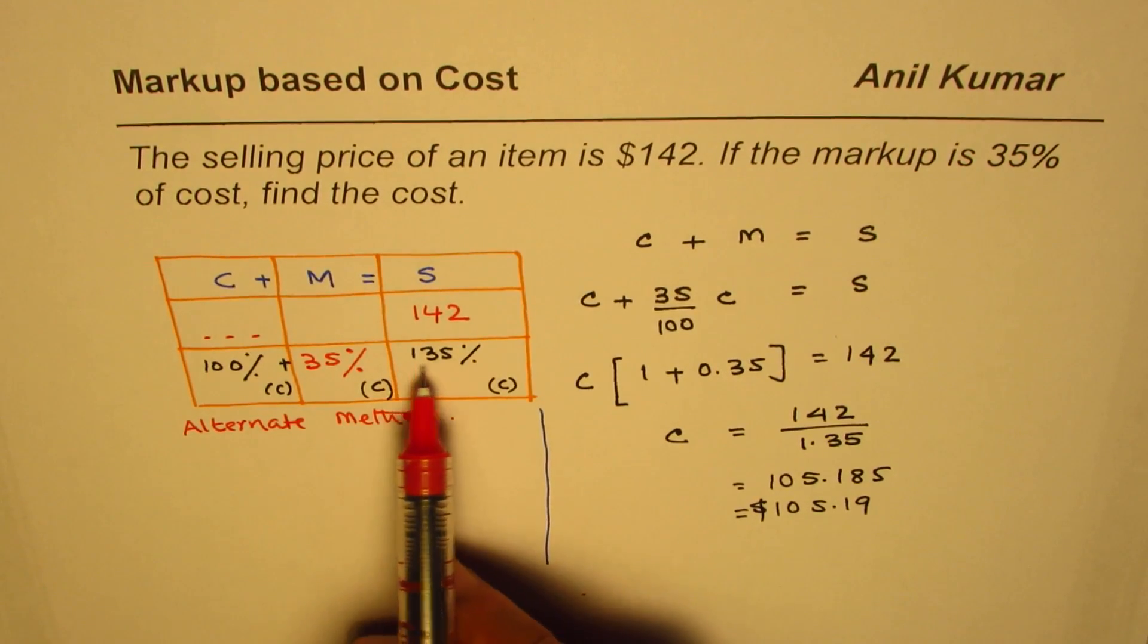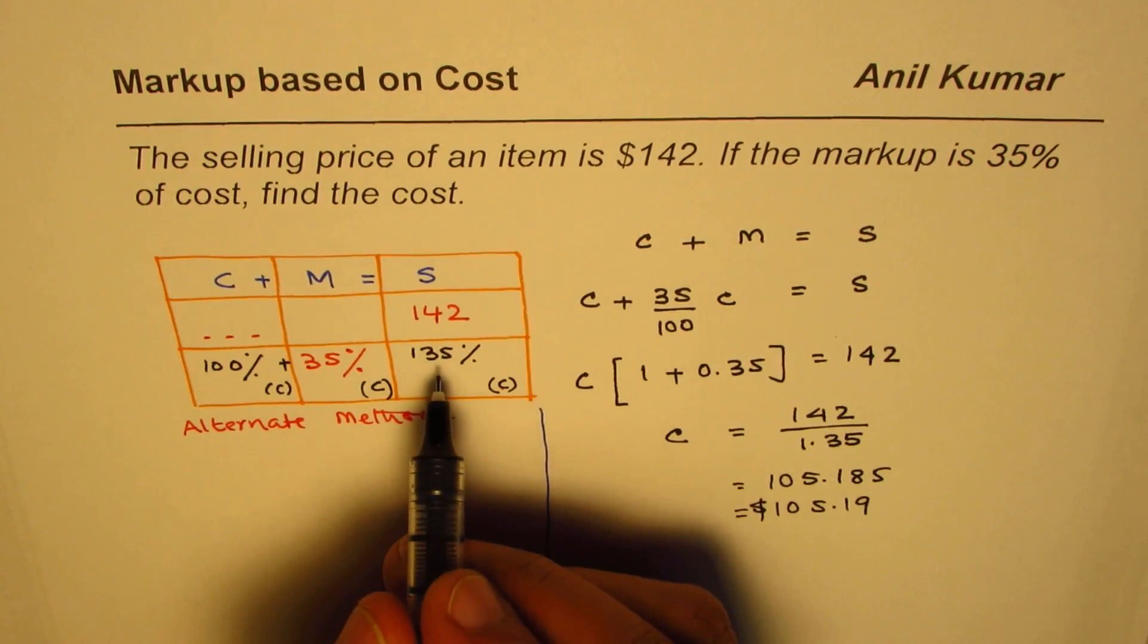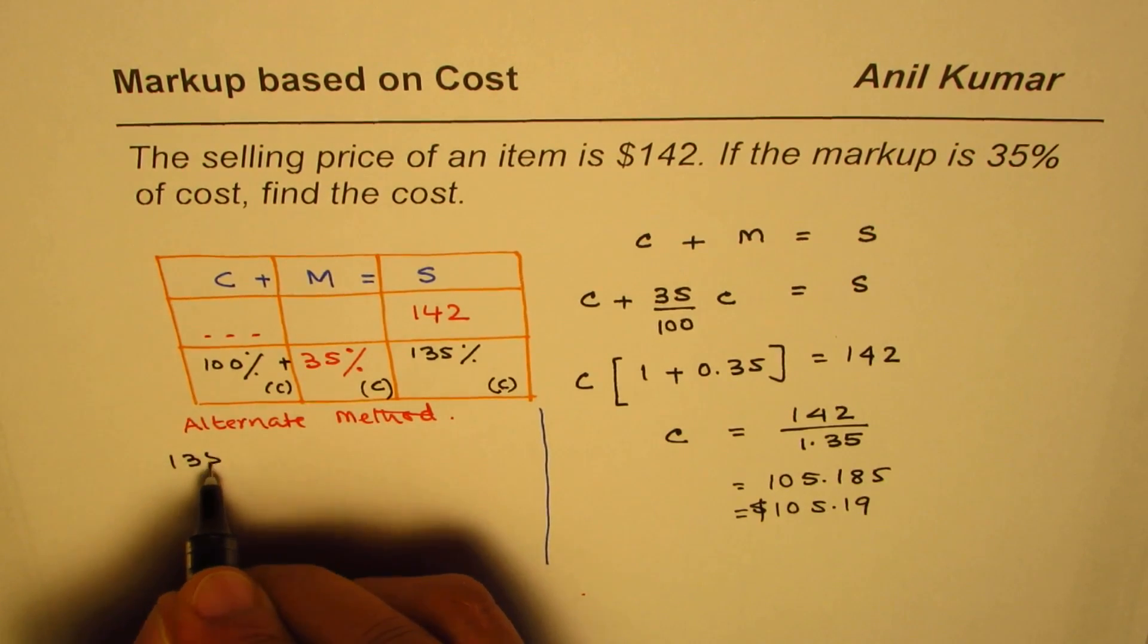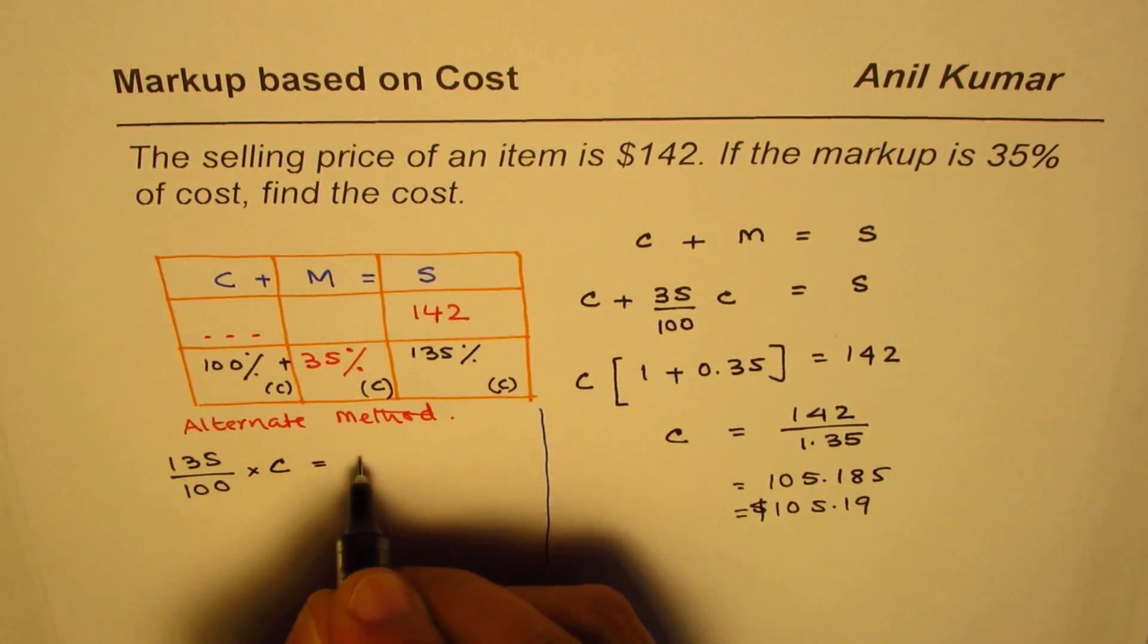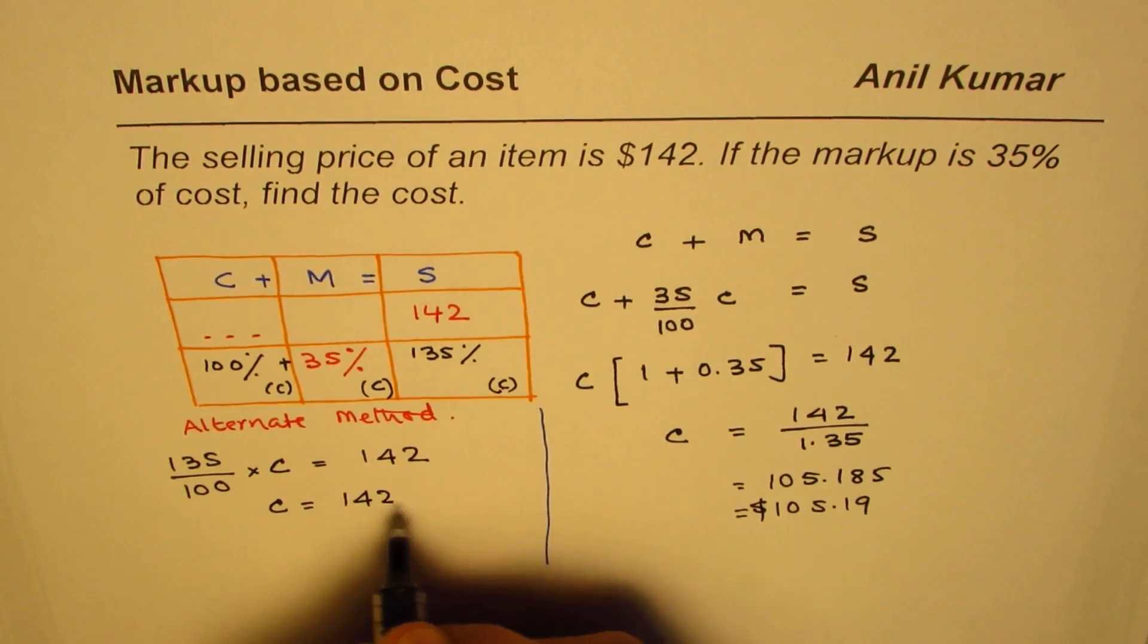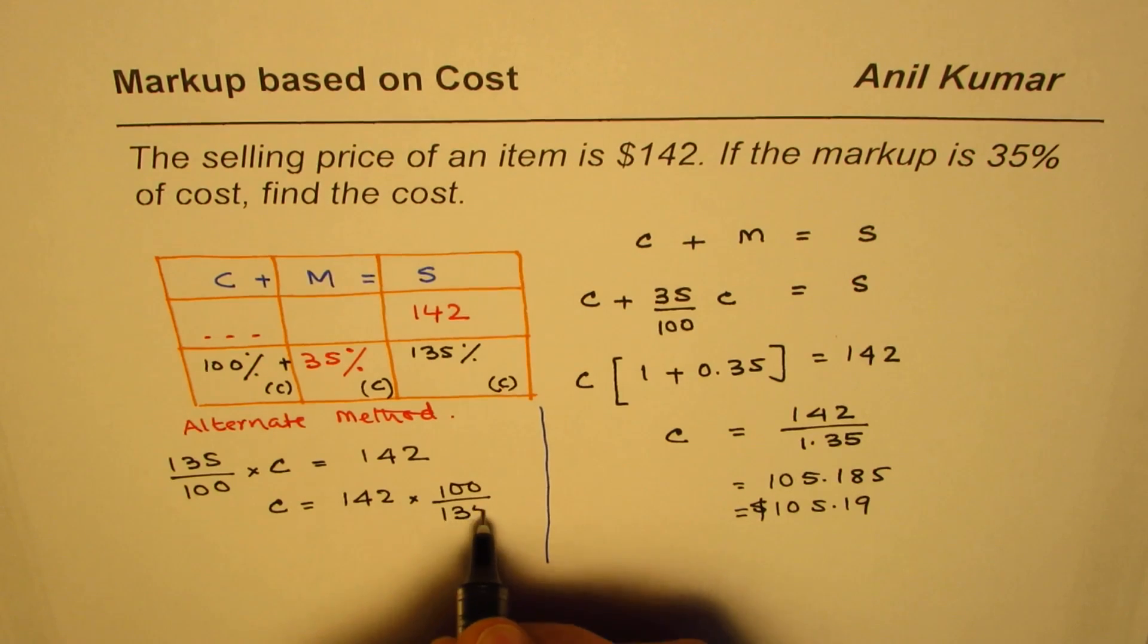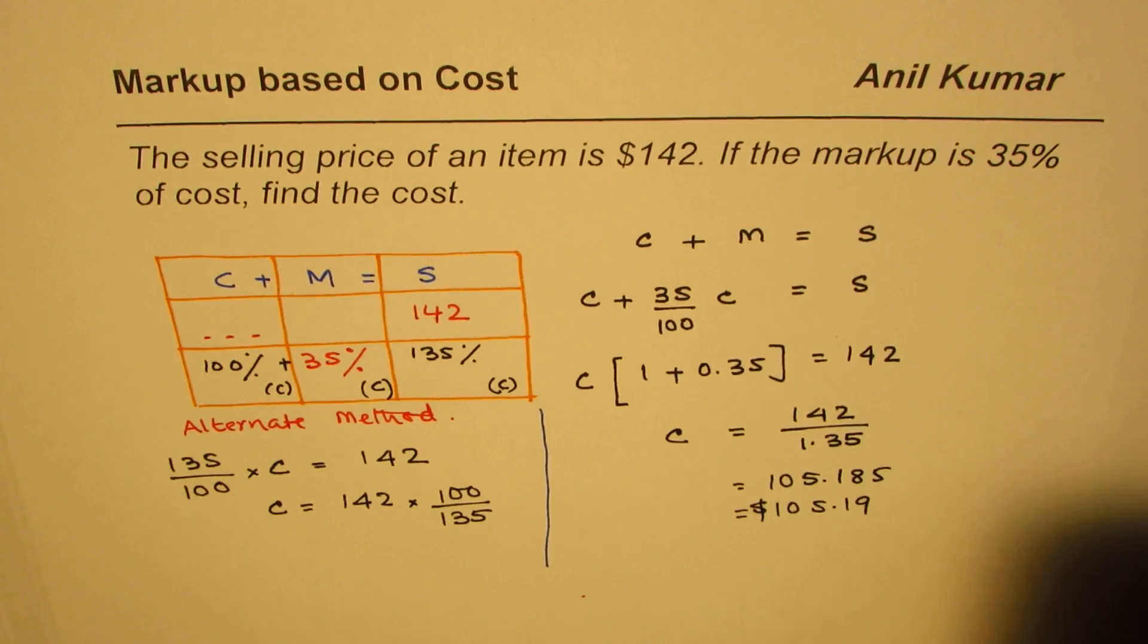We know 135% of the cost price is $142, and that is why I had written this. We'll adopt this method. 135% of the cost price means 135 over 100 times cost price equals 142. Therefore cost price is 142 times 100 over 135. This is kind of direct method to find the cost.